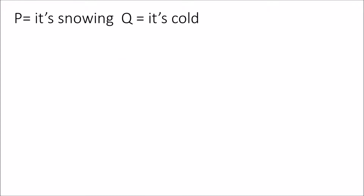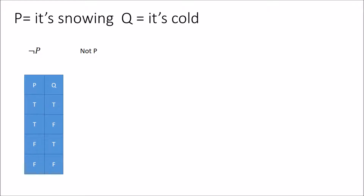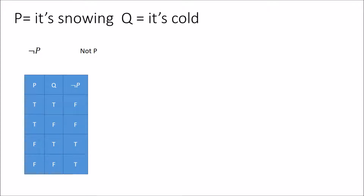The third operation is very simple — that symbol means NOT. Sometimes in logic we have to use the word not. So if we said not P, that symbol just means it's not snowing. The first two rows have snowing as true, so not P is false there. In the next two rows it's not snowing, so not P is true. We don't care whether it's cold — we just want to know whether it's snowing or not snowing.